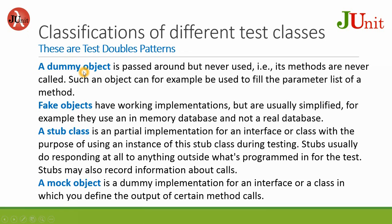First, a dummy object. A dummy object is passed around but never used — for example, its methods are never called. Such an object can, for example, be used to fill the parameters of a method.